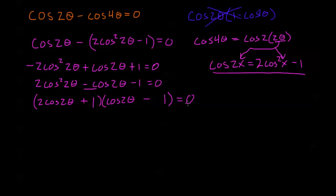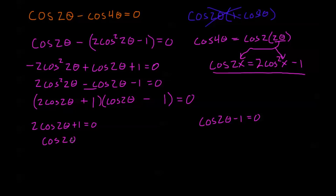Now I have a product equal to 0, so I can set each factor equal to 0 independently. I want to look at when 2 cosine 2 theta plus 1 equals 0 and when cosine of 2 theta minus 1 equals 0. Working with the left factor: cosine of 2 theta equals negative 1 half. From the right factor: cosine of 2 theta equals 1.